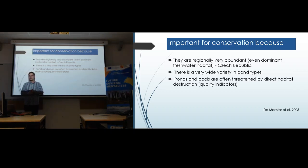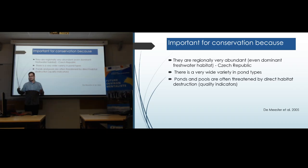Many authors — for example, Biggs — have highlighted freshwater ponds as one habitat overlooked by many conservation organizations. There are highlights that ponds can be seen as a specific study system for the conservation of different groups of organisms. It's not only one group that can be studied and protected through the pond system. Ponds can be seen as much more important at the regional and local scale, and we can find specific ponds usable for the conservation of many threatened species.